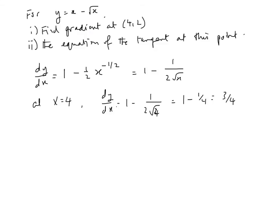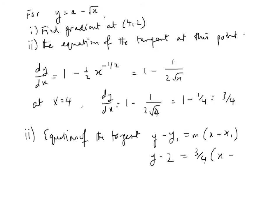This is obviously the gradient of the tangent. So the equation of the tangent can be given by the formula y - y₁ = m(x - x₁). We can substitute 4, so y = 2, and we know that from the coordinate that's given to us. This gives us 3/4(x - 4). And we can rearrange this to give us y = 3/4x - 1.